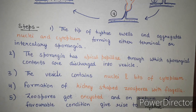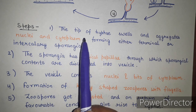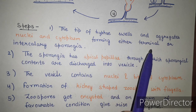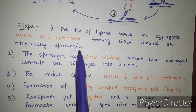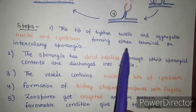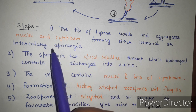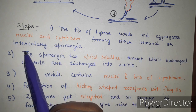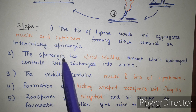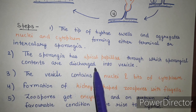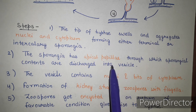To summarize asexual reproduction in Pythium: first, the tip of the hyphae swells and aggregates nuclei and cytoplasm, forming either terminal or intercalary sporangia. The sporangia has an apical papillae through which the sporangial contents — nuclei and cytoplasm — are discharged into the vesicle, which is formed when the inner layer of the sporangia bulges out as a bag-like structure.